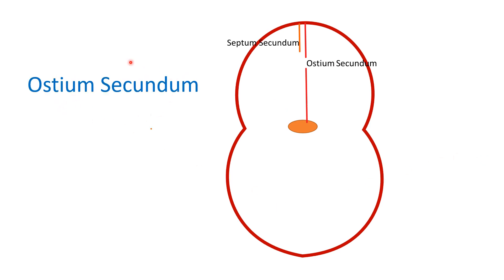The ostium secundum defect is the commonest type of atrial septal defect. There is a hole in septum primum — ostium means gap or hole, and secundum means second. This is the second hole. In this defect, septum secundum is not overlapping the ostium secundum, so it remains patent after birth. This defect is located in the central part and is the commonest type of atrial septal defect.